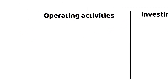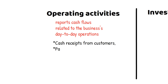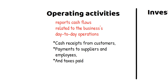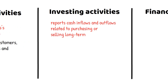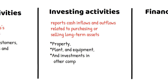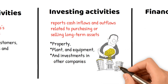The operating activities section reports cash flows related to the business's day-to-day operations, such as cash receipts from customers, payments to suppliers and employees, and taxes paid. This section provides insight into the cash generated or used by the company's core operations. The investing activities section reports cash inflows and outflows related to purchasing or selling long-term assets, such as property, plant, and equipment, and investments in other companies. This section helps investors and creditors understand how the company invests its cash resources.